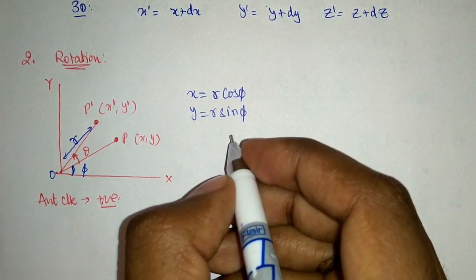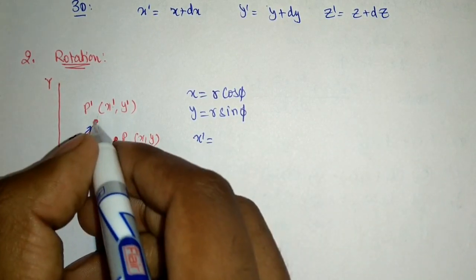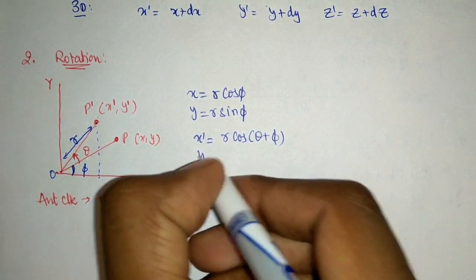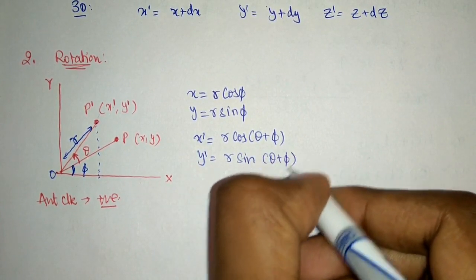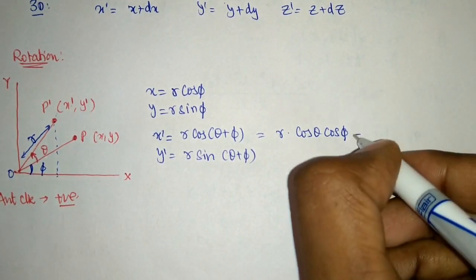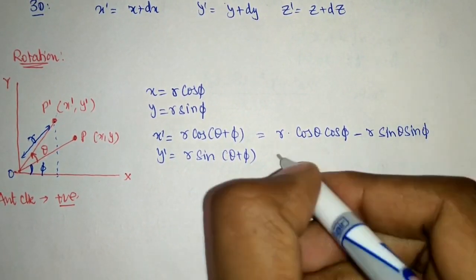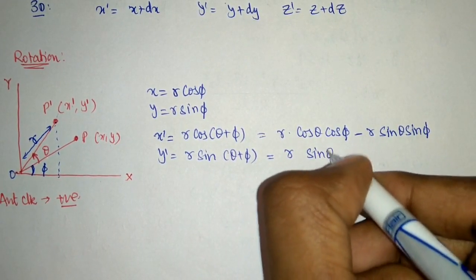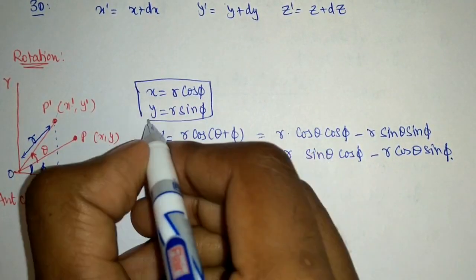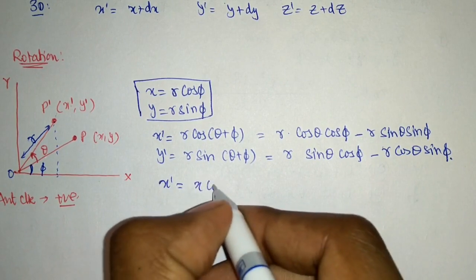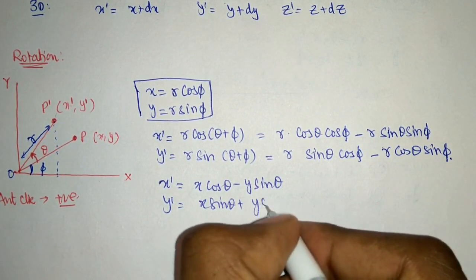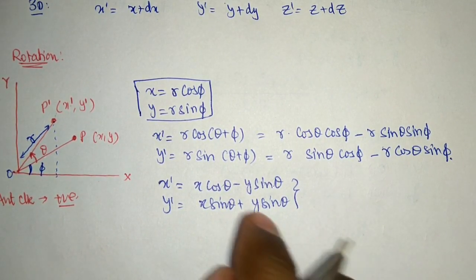Let the length of OP or OP dash be r, and initially it had an angle phi with respect to the x-axis. So x equals r cos phi and y equals r sin phi. I am giving this brief derivation so you can understand and retain the formula. x dash equals r cos(theta plus phi) and y dash equals r sin(theta plus phi). Expanding: x dash equals r cos phi cos theta minus r sin phi sin theta, and y dash equals r sin phi cos theta plus r cos phi sin theta. Substituting back, x dash equals x cos theta minus y sin theta, and y dash equals x sin theta plus y cos theta.